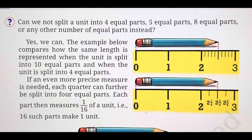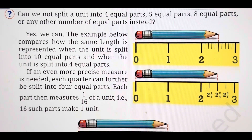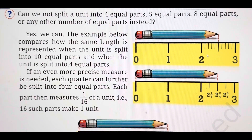The example below compares how the same length is represented when the unit is split into 10 parts or 4 parts. You can see the pencil over here. Two pencils are shown. They have split it into 10 parts between 2 and 3. Here, 10 parts are made. You can say it is 2 and 5 tenths — that is 5 upon 10.